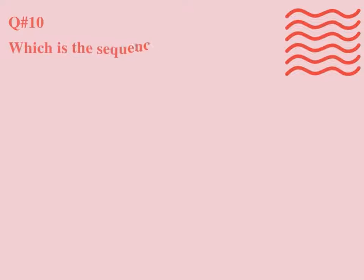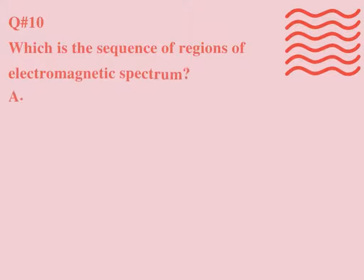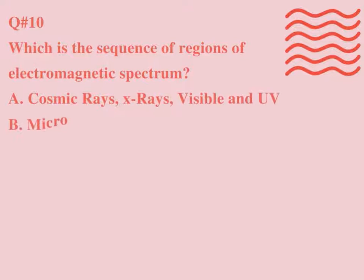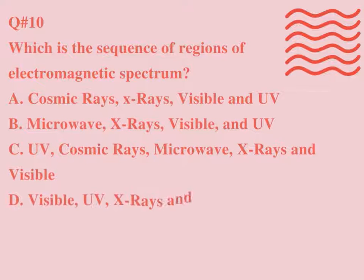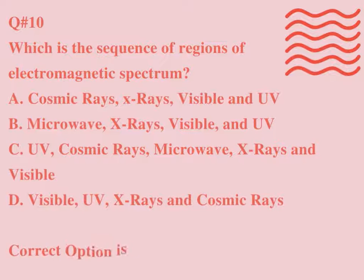Question number 10. Which is the sequence of regions of the electromagnetic spectrum? A. Cosmic rays, X-rays, visible, UV. B. Microwave, X-rays, visible, and UV. C. UV, cosmic rays, microwave, X-rays, and visible. D. Visible, UV, X-rays, and cosmic rays. Correct option is D.